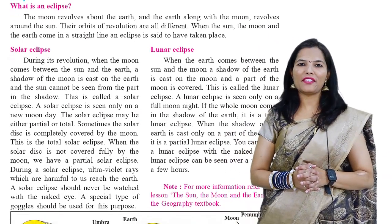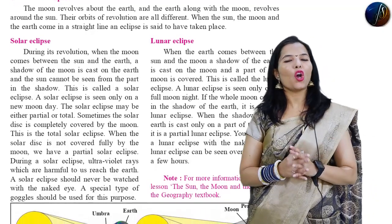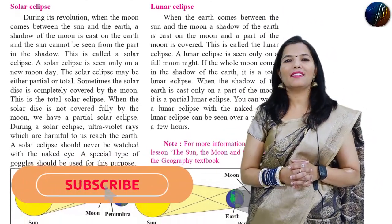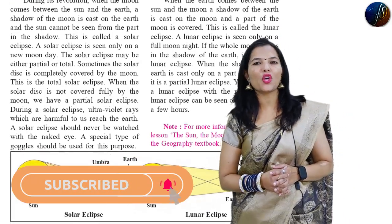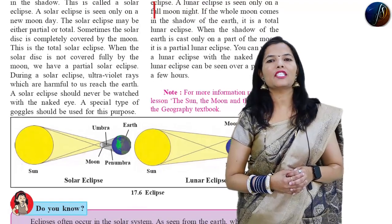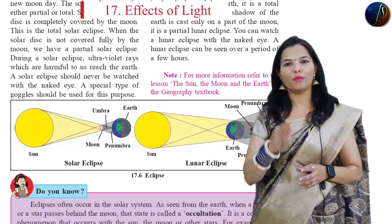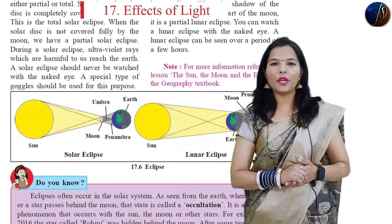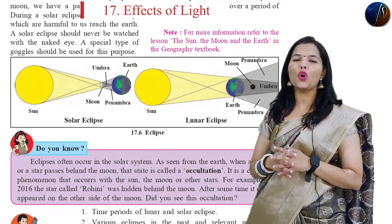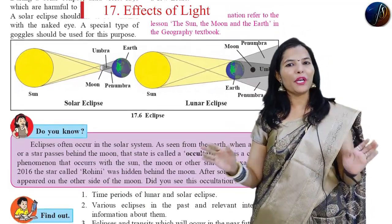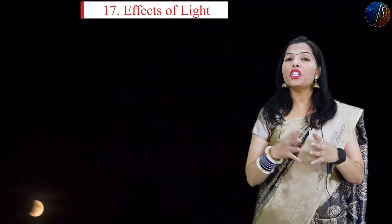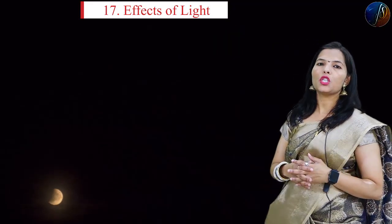Good morning, my dear friends and students. I am Sadhana and all of you are enjoying mathematics and science with me. Our point is Math and Science DS Digital School. Today we enjoy 7th standard science. This is an interesting lesson called Effects of Light. This is the first lesson of this video, meaning we are going to complete 17 lessons, and we are going to start the next lesson in the next video, which is the solar eclipse.